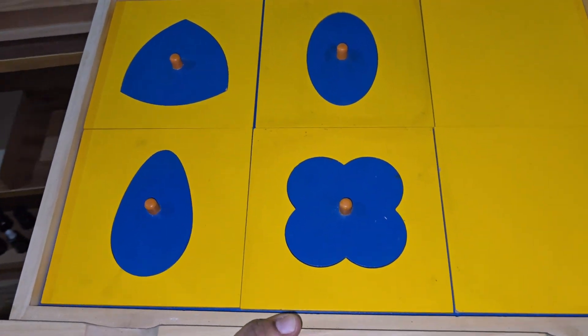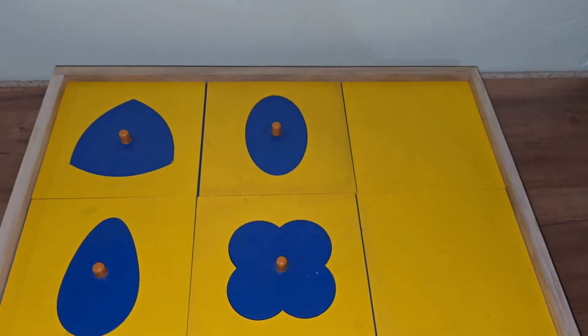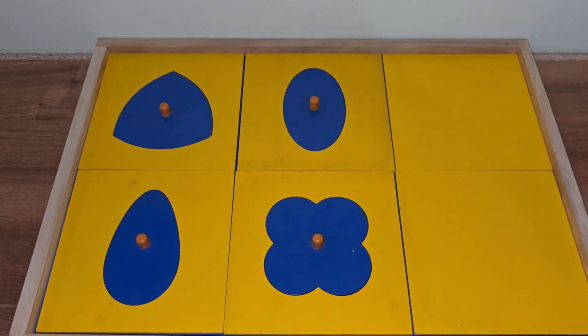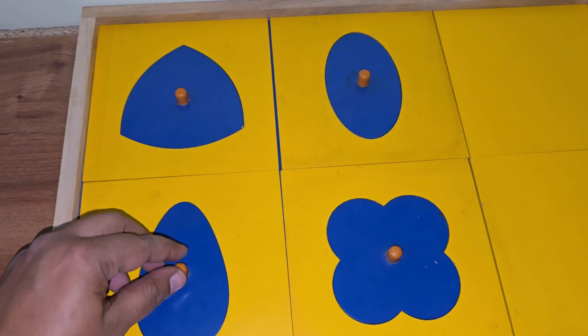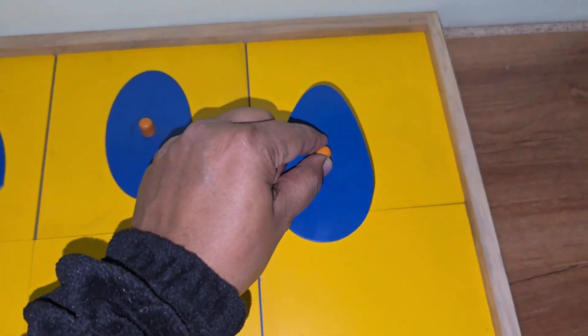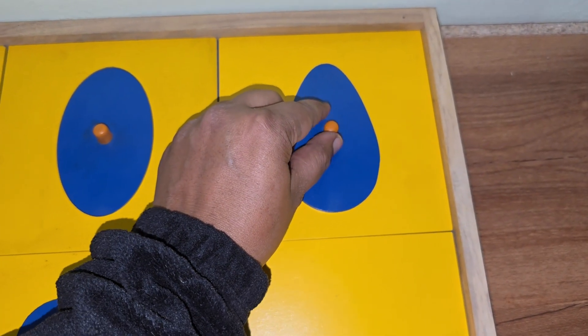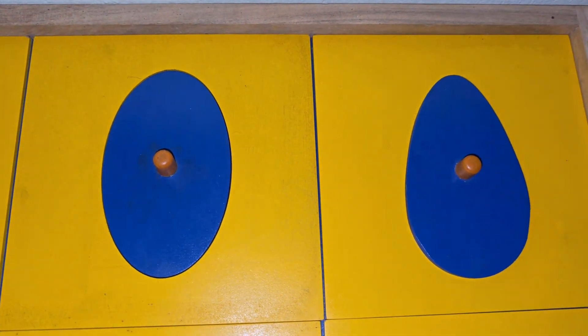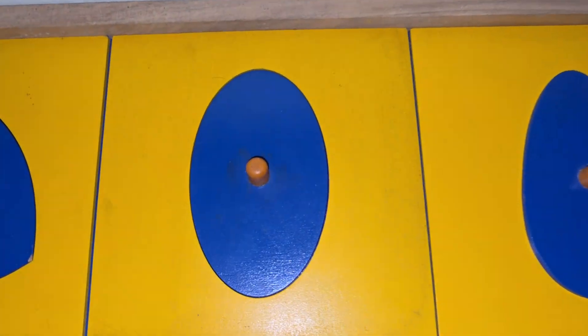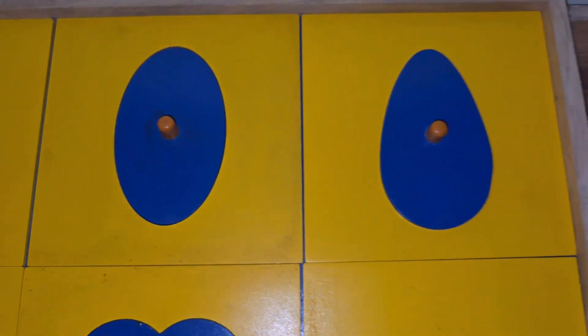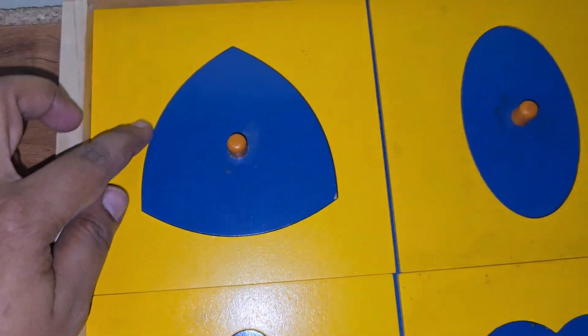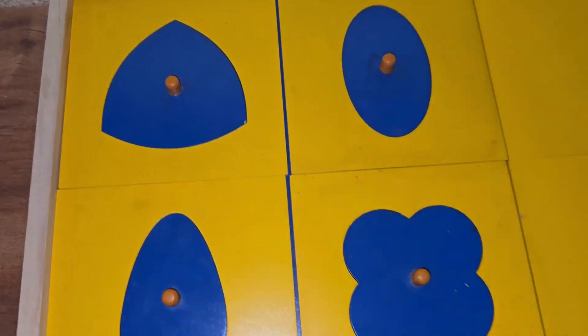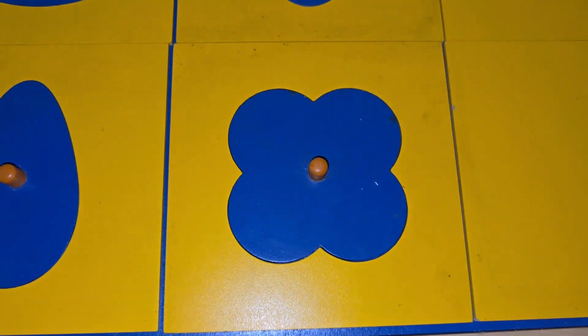In the sixth drawer, we can see six curved figures. Some students don't understand the difference between ellipse and oval. This is ellipse and this one, oval. This is called curvilinear triangle and this is quatrefoil.